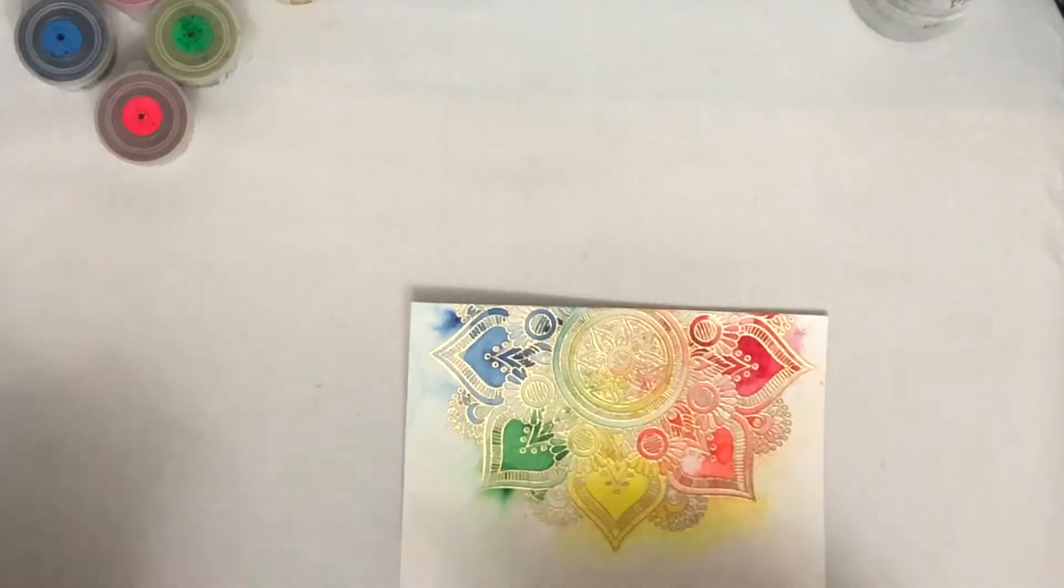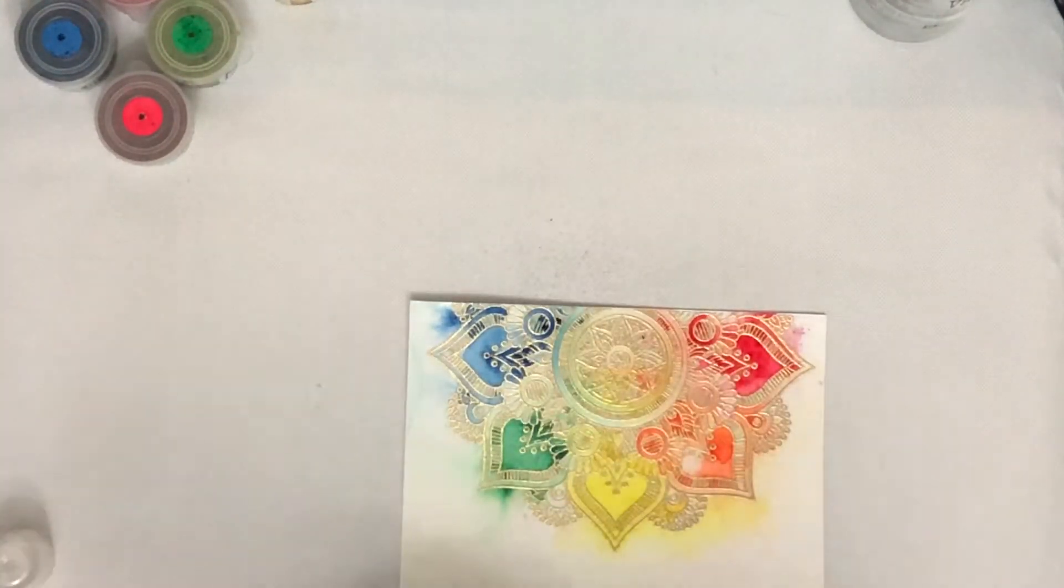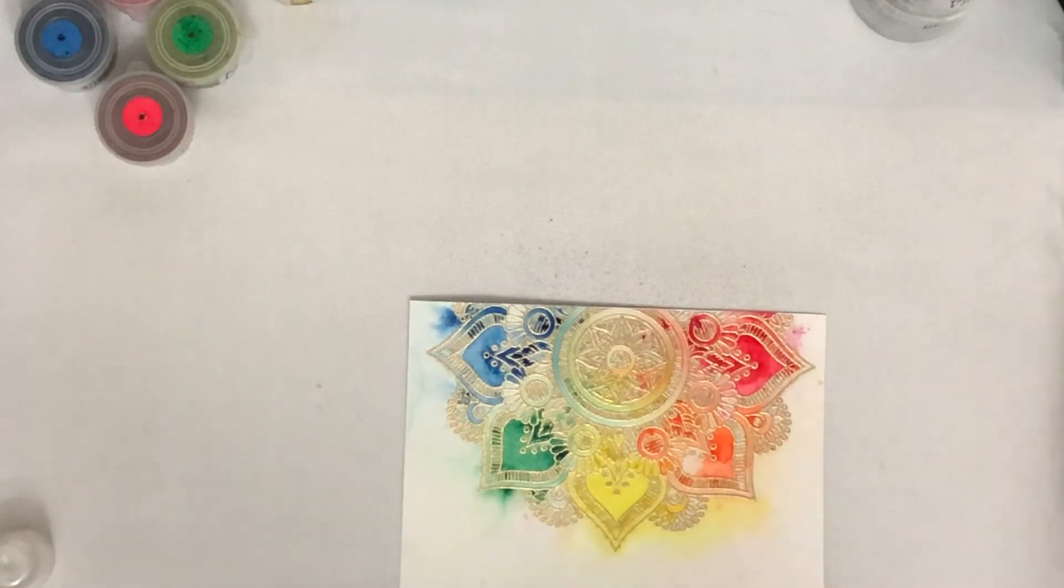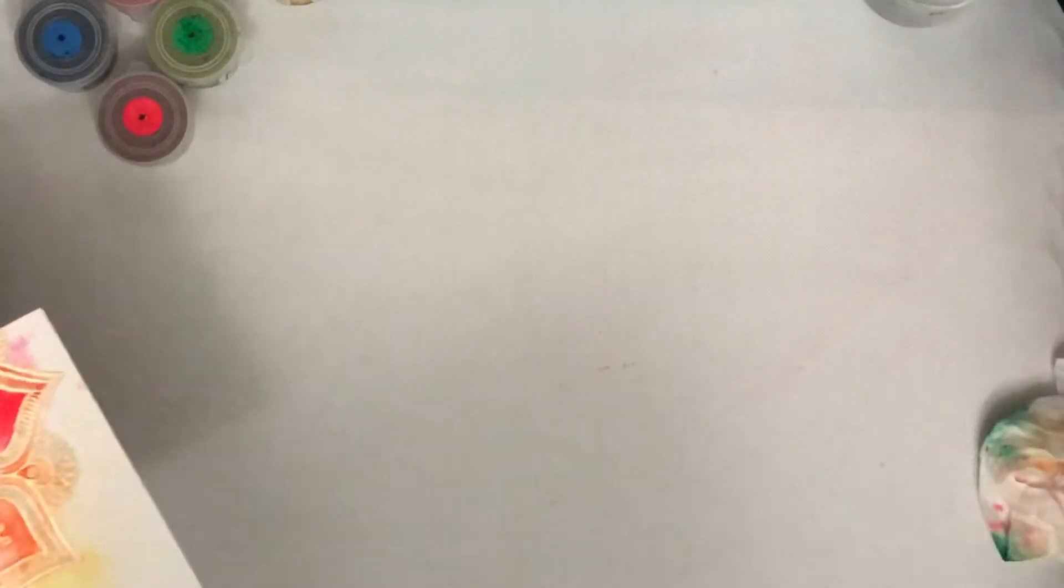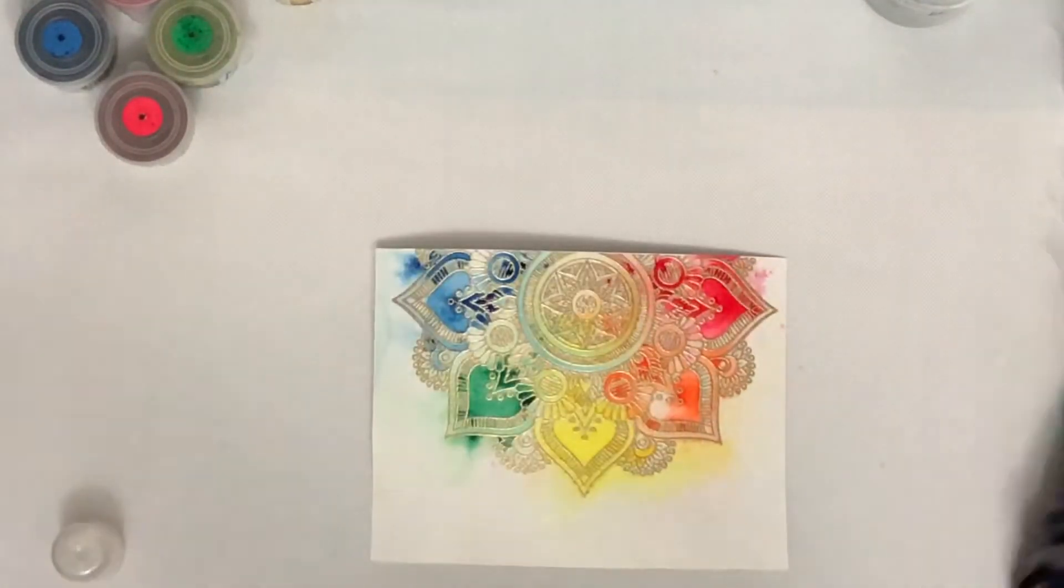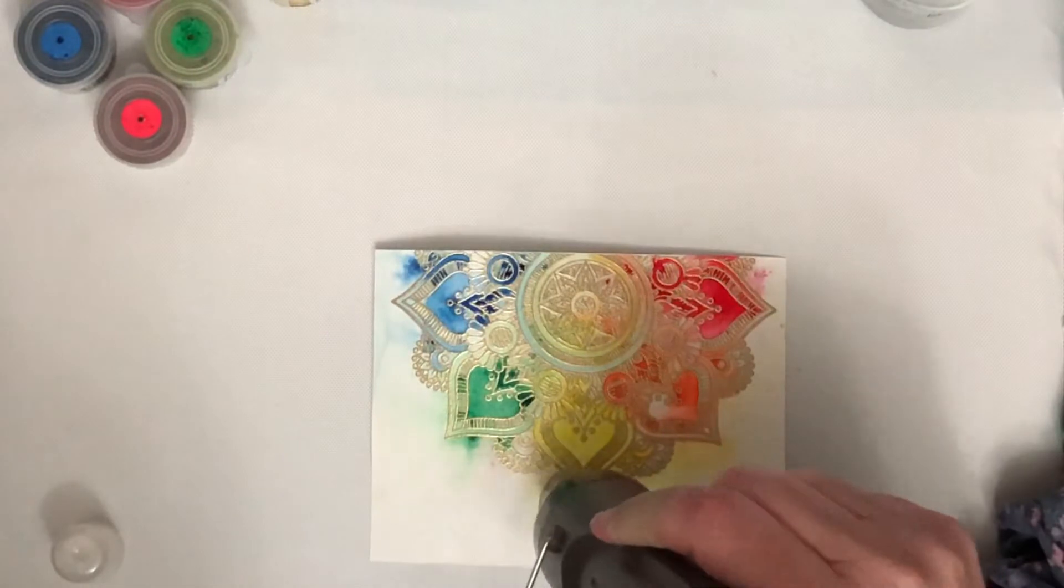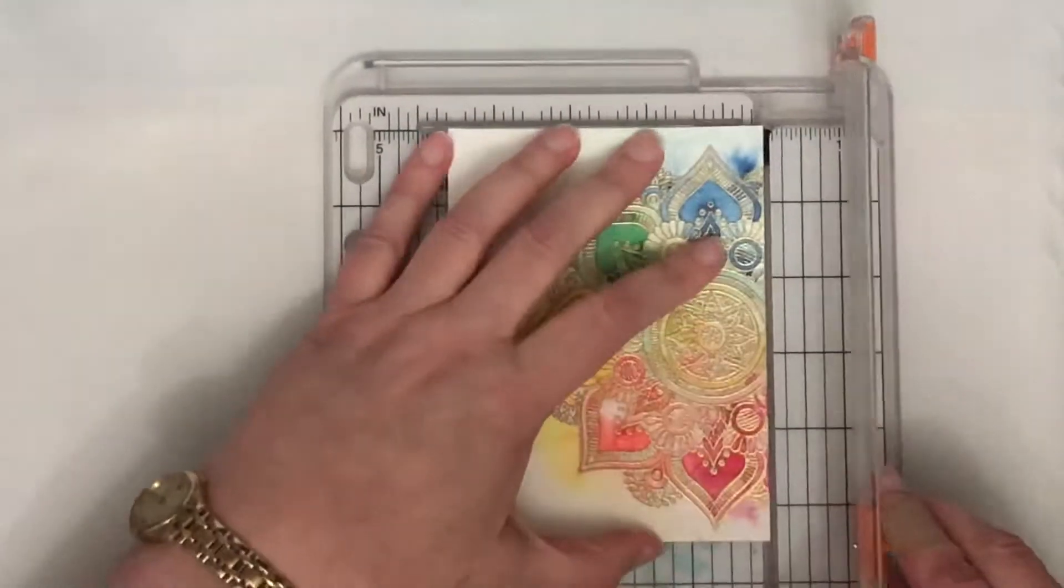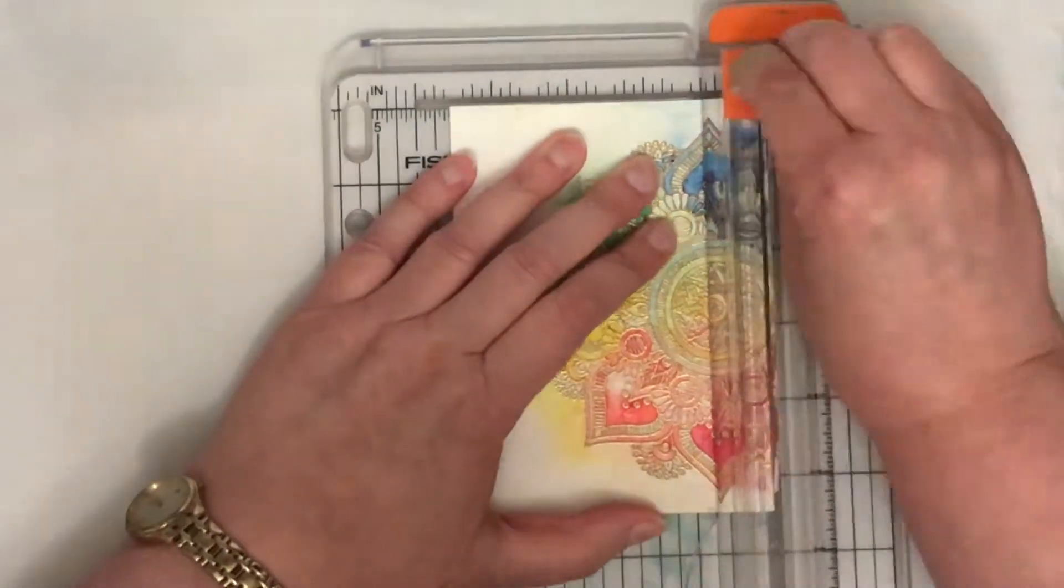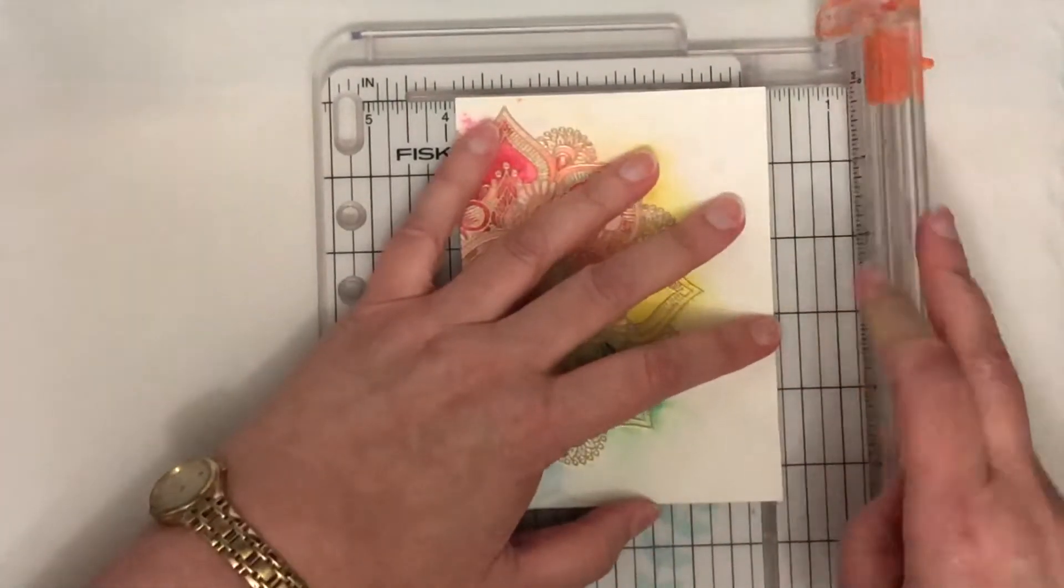Then I decided that the gold embossing powder wasn't enough shine for me. So I'm spraying this panel with some Perfect Pearls powder mixed with water. I've got that in a Perfect Pearls Mists spray bottle which I really need to replace because the plunger on it is broken, so every time I spray it I have to pull the plunger back up again to be able to spray it again.